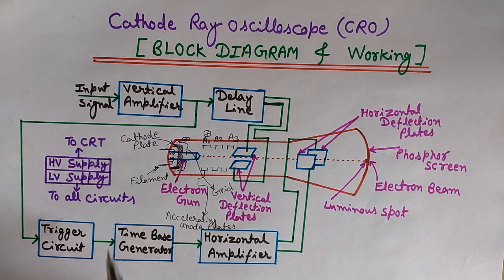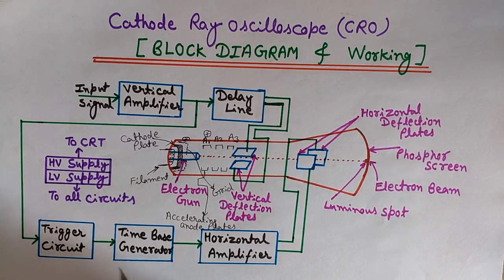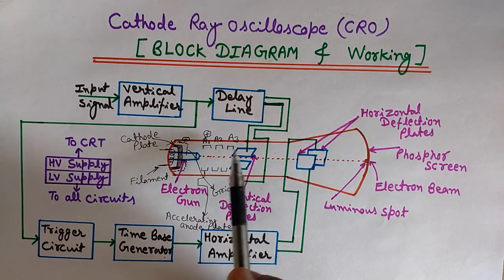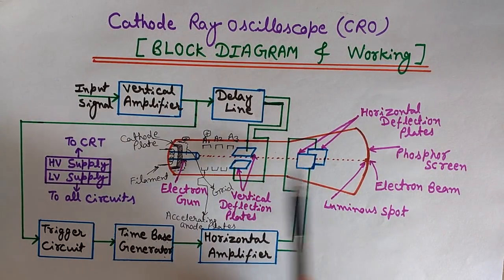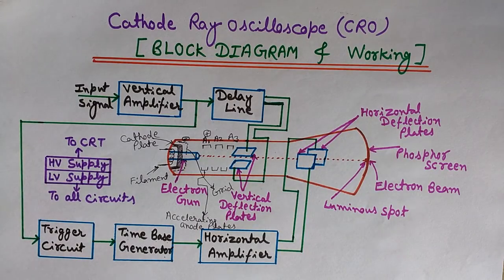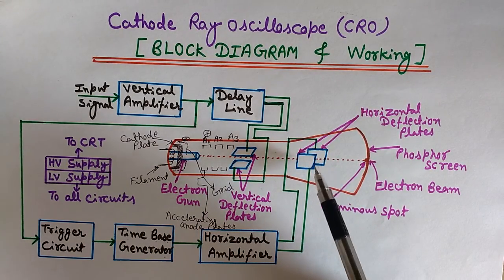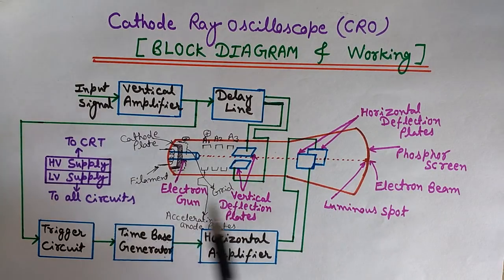The time base generator repeats a sawtooth waveform at a rate that determines the time per division on the screen. It is used for synchronizing the two kinds of deflections so that the signals appear at the same time on both plates, and no phase difference is seen. The horizontal amplifier is used to raise the voltage to a level sufficient for deflecting the high accelerating electron beam horizontally.